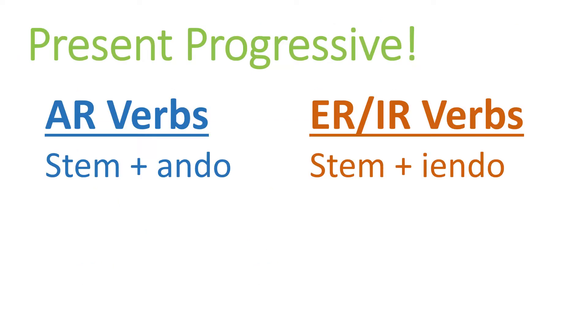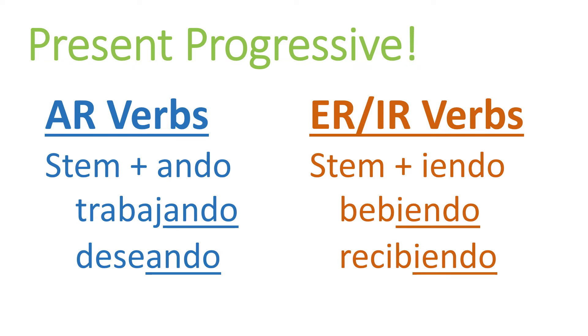Okay, let's refresh yourself on present progressive real quick. AR verbs. To say I am doing something, I'm going to take that stem, drop the AR and add ando. So to say, for example, working, trabajar, drop the AR and add ando and we get trabajando. Say if I'm wanting or desiring something, desear, drop the AR and it's deseando. ER and IR verbs follow the same pattern but with I-E-N-D-O instead of ando. So to say, for example, drinking, beber becomes bebiendo. Recibir will become recibiendo.